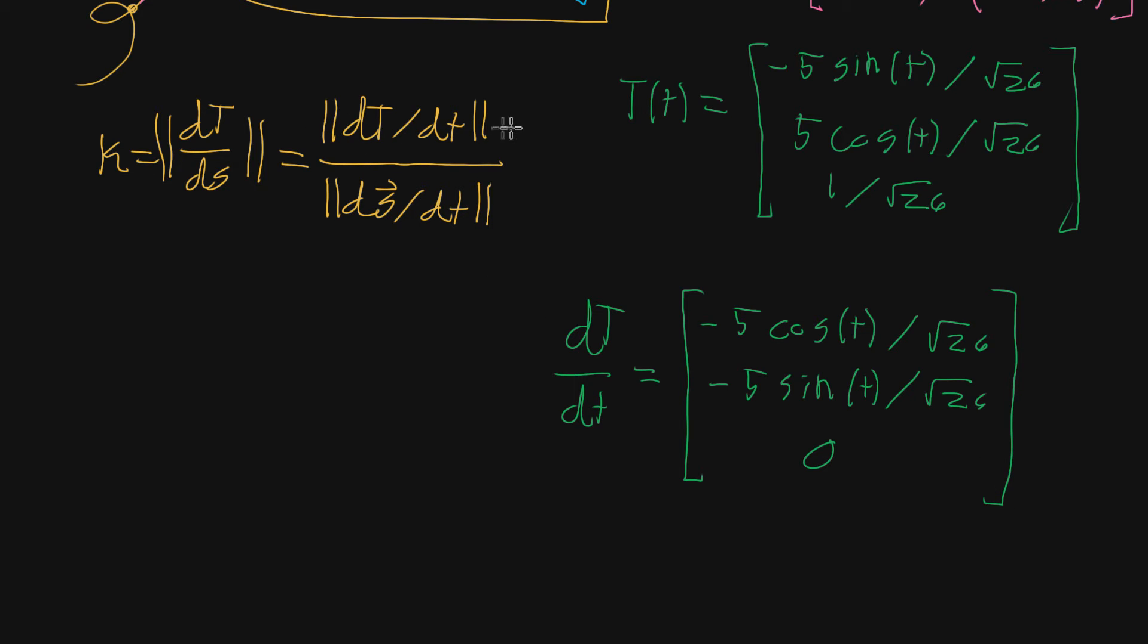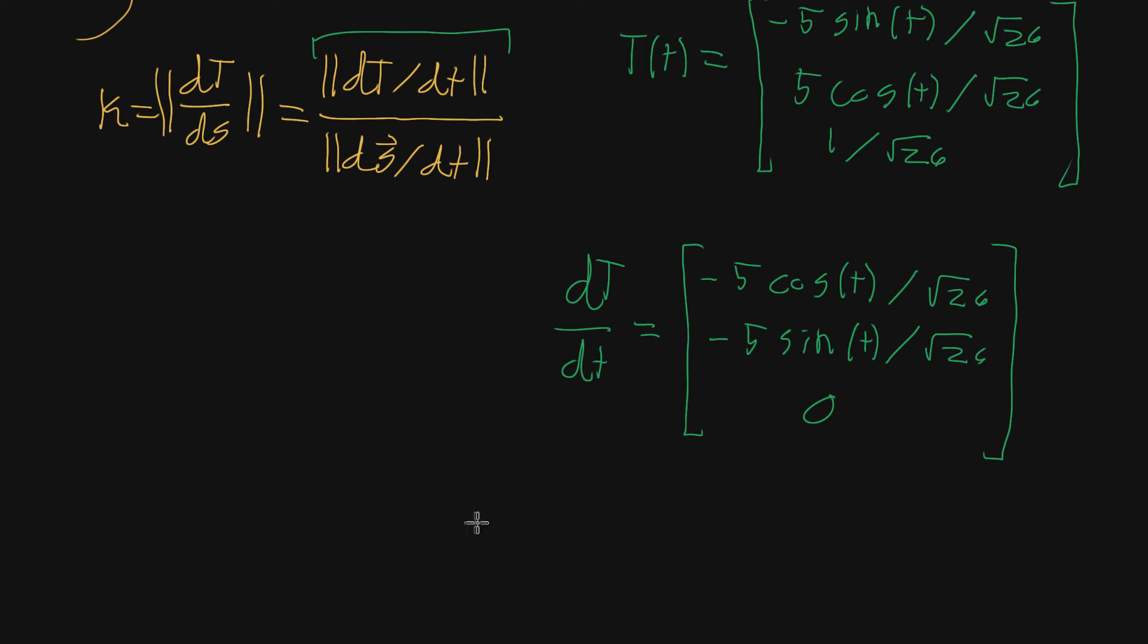Next step, we're going to take the magnitude of that vector that we just found. So we're trying to find the magnitude of the derivative of the tangent vector function. The magnitude involves the square root of the sum of the squares of these guys. So the square of that first component is going to be 25 multiplied by cosine squared of t, all divided by 26, because the square of the square root of 26 is 26. And then we add to that 25 times sine squared of t, also divided by 26.